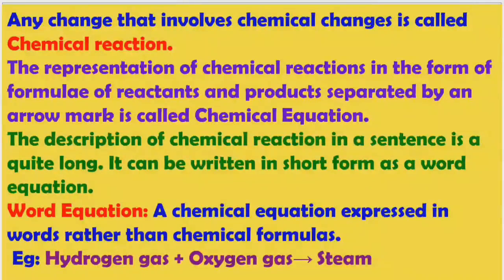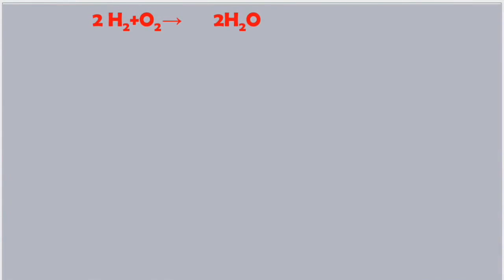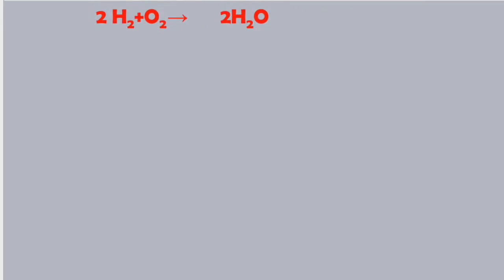For example, hydrogen gas reacts with oxygen gas to form steam — this is the word equation. If you write the formulas, that is the chemical equation: two moles of hydrogen react with one mole of oxygen to form two moles of water or steam.